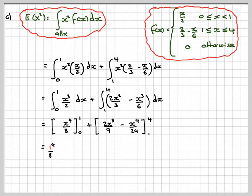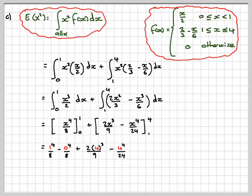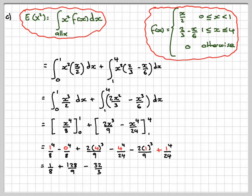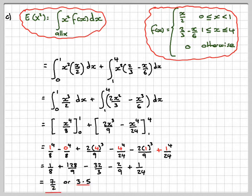Substituting the limits: 1 to the 4 over 8 minus 0, plus 2 times 4 cubed over 9 minus 4 to the 4 over 24, minus 2 times 1 cubed over 9, plus 1 to the 4 over 24. That gives 1 eighth, plus 128 over 9, minus 4 to the 4 over 24 which comes to 32 over 3, minus 2 ninths plus 1 over 24. On the calculator that gives me 7 over 2, or 3.5.